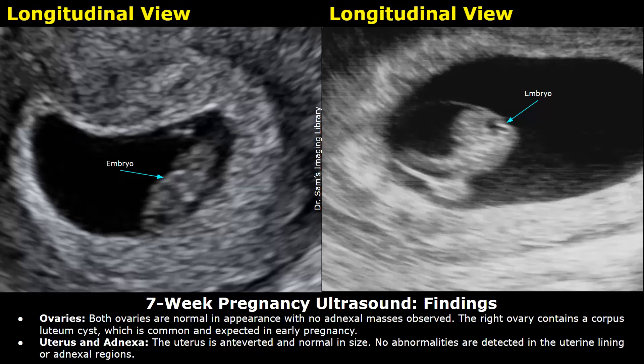Ovaries: both ovaries are normal in appearance with no adnexal masses observed. However, the right ovary contains a corpus luteum cyst, which is common and expected in early pregnancy.